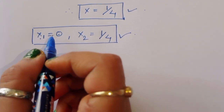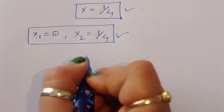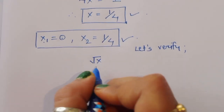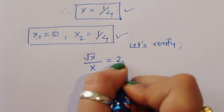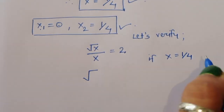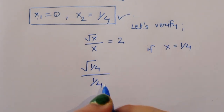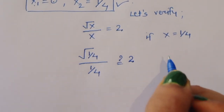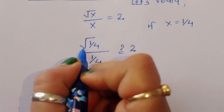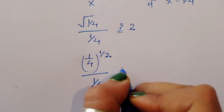For x1 equal to 0, we skip that because the value is always 0. Let's verify for x2 equal to 1 by 4. The question is: square root of x divided by x is equal to 2. Substituting x equal to 1 by 4: square root of 1 by 4, divided by 1 by 4, question mark 2.